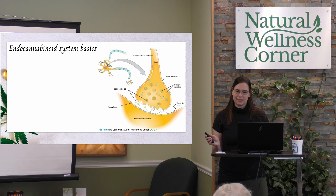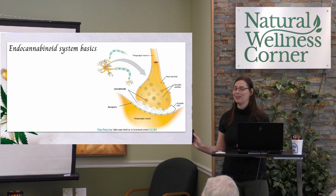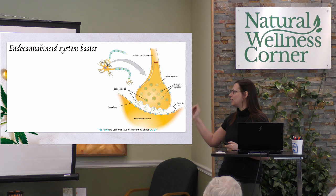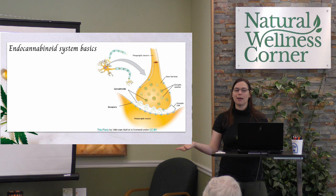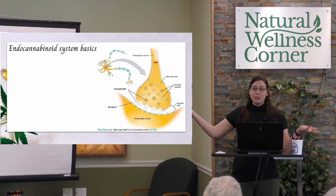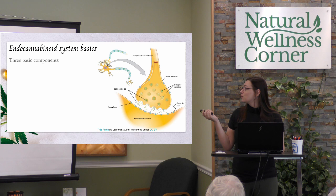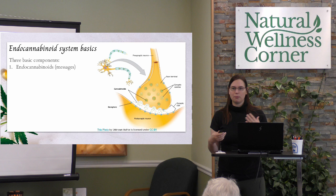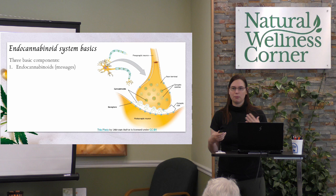I know this picture might give some of you flashbacks to high school biology, but bear with me. What we're looking at here is just a nerve. At the first part of the nerve you have cannabinoids inside it — that's where they hang out until it's time to be released. When your body decides it's time to use them, it pushes them out toward whatever it's sending the signal to. The three basic components of the endocannabinoid system are our endocannabinoids themselves — you can think of them as messages.